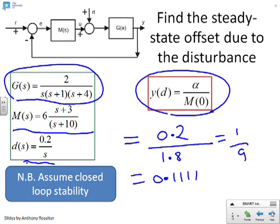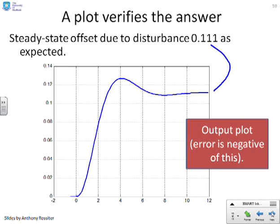And here we go. And you can see again, the 0.11 is indeed where the system settles. So the summary, if you put an integrator into the process, it's not going to remove the steady-state offset for an input disturbance.